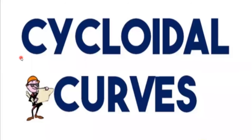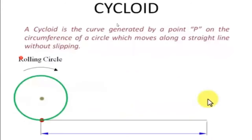Hello friends, welcome to our channel Mechanical Motivator. In this video we are going to see an introduction to cycloid and how to draw a cycloid curve. A cycloid is a curve generated by a point P on the circumference of a circle which moves along a straight line without slipping.